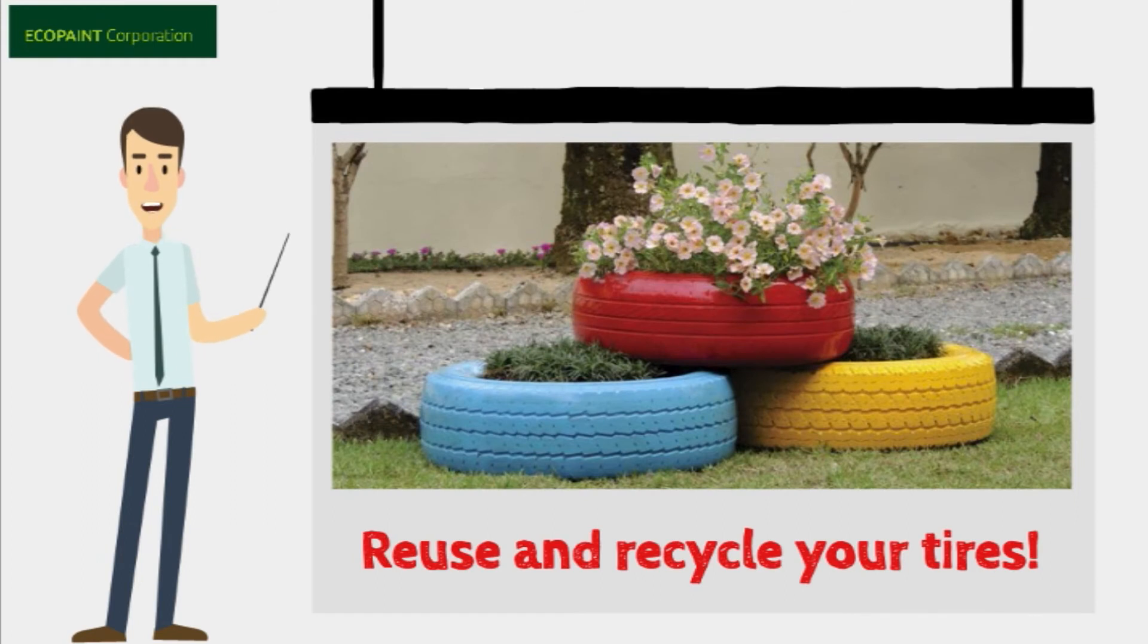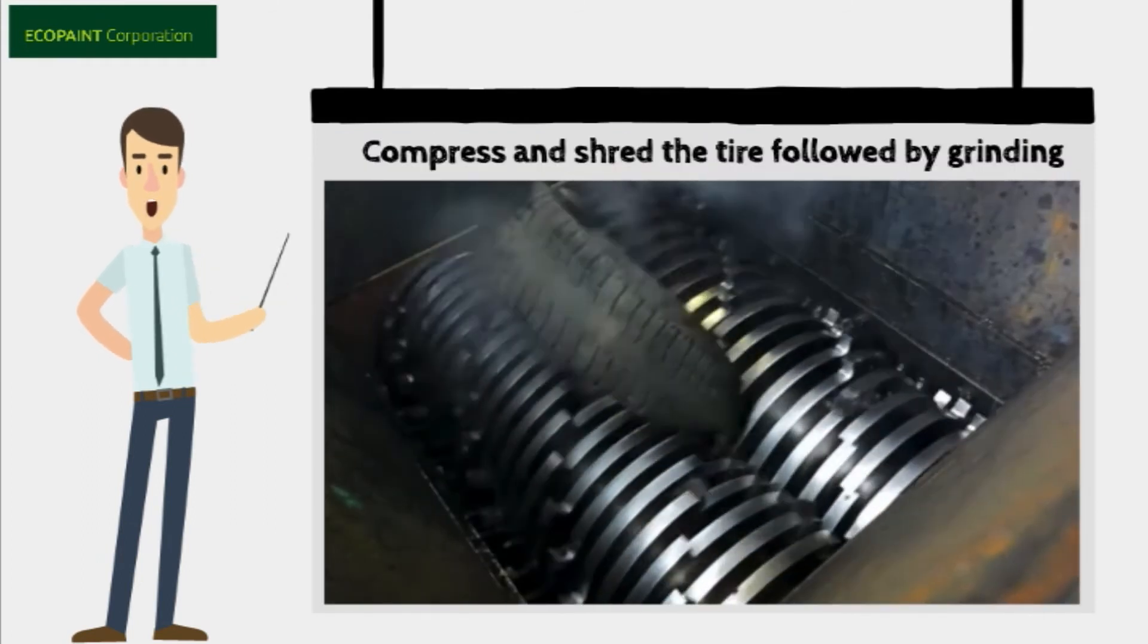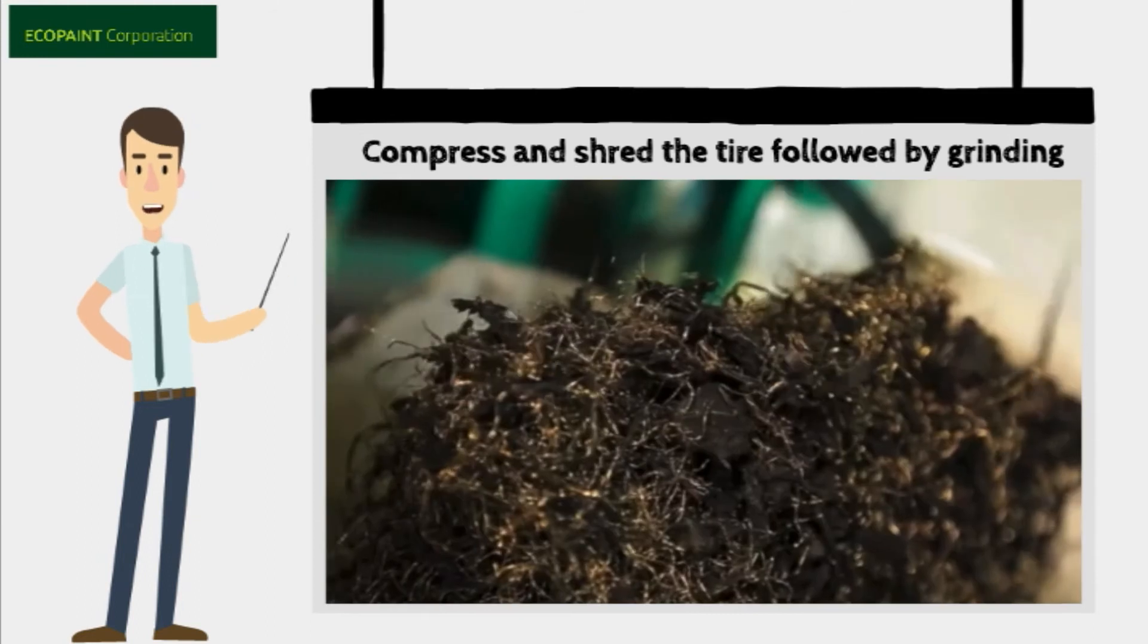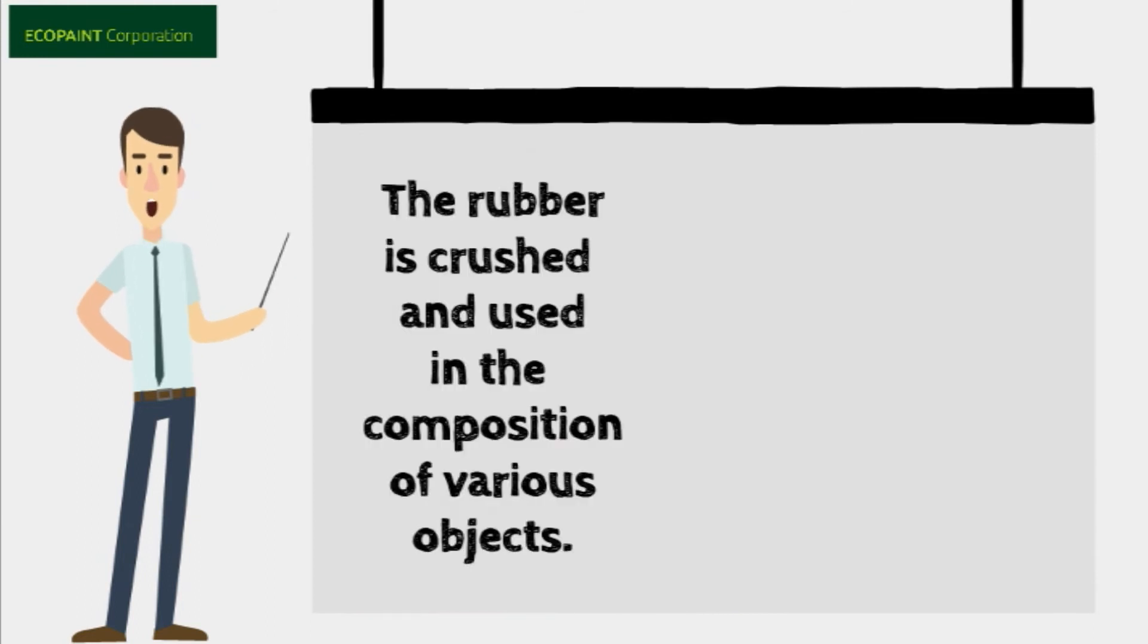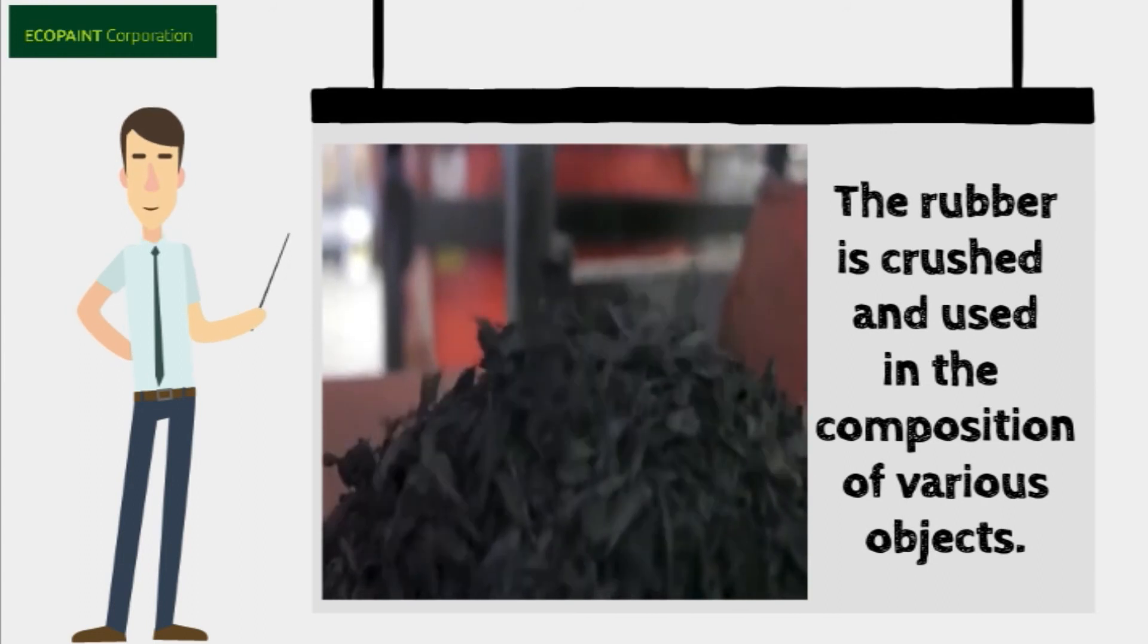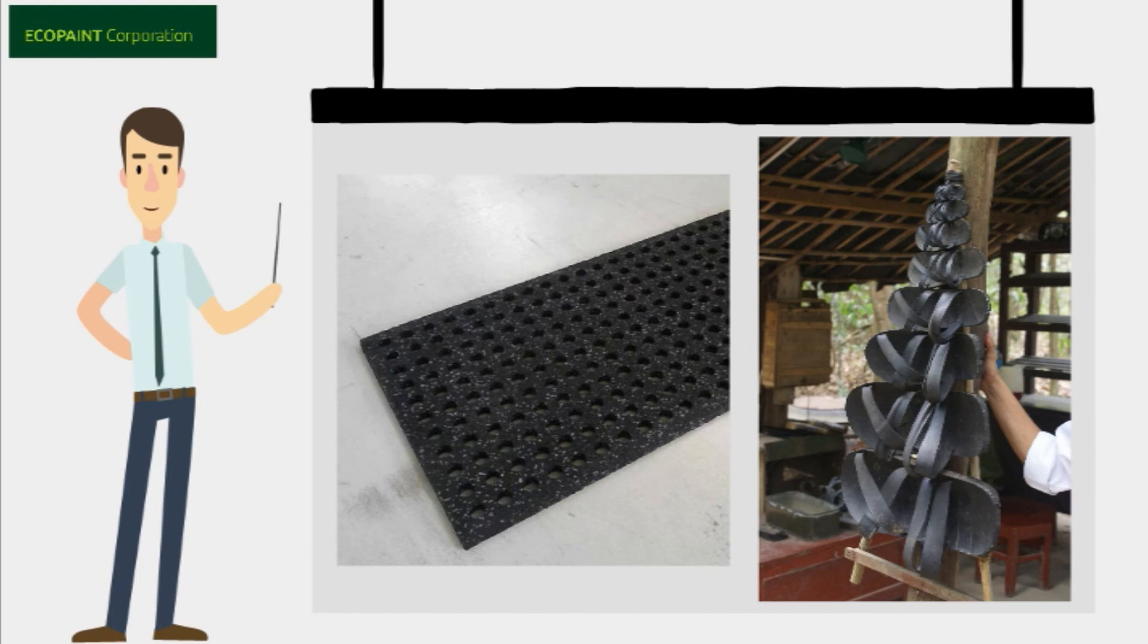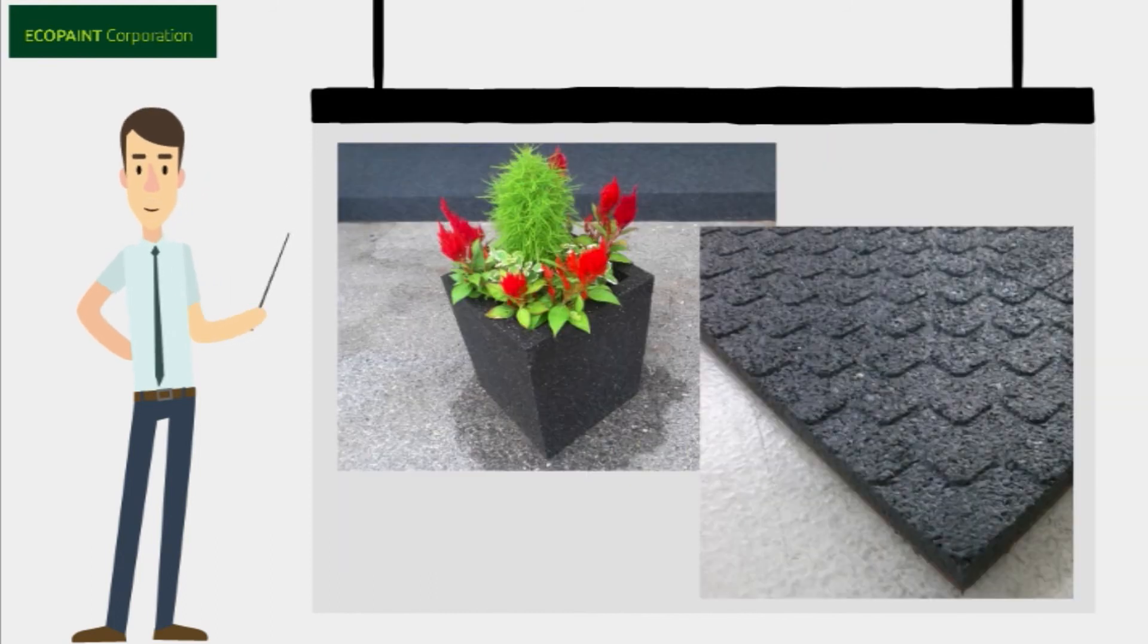The tire recycling process consists of compressing and fragmenting the material, followed by grinding. The crushed rubber is used in the composition of mixtures that give life to flower boxes, rugs, shoe soles, vases, high-density plates, and other products.